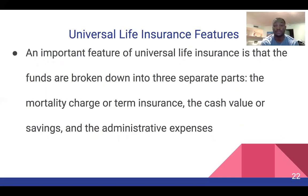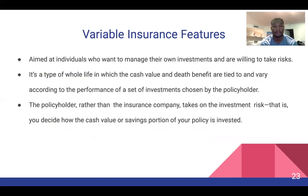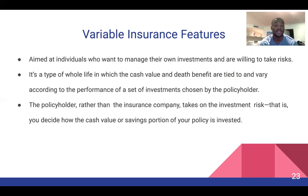An important feature of universal life insurance is that the funds are broken down into three separate parts: the mortality charge or term insurance, the cash value or savings, and the administrative expenses. Variable insurance is aimed at individuals who want to manage their own investments and are willing to take risks. It's a type of whole life in which the cash value and death benefit are tied to and vary according to the performance of a set of investments chosen by the policyholder — so the policyholder rather than the insurance company takes on the investment risk.